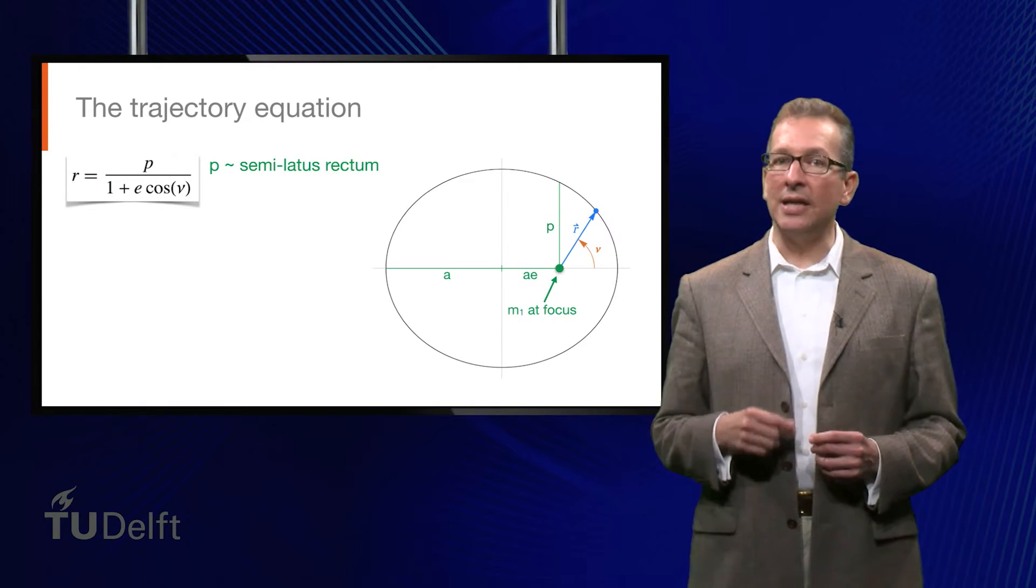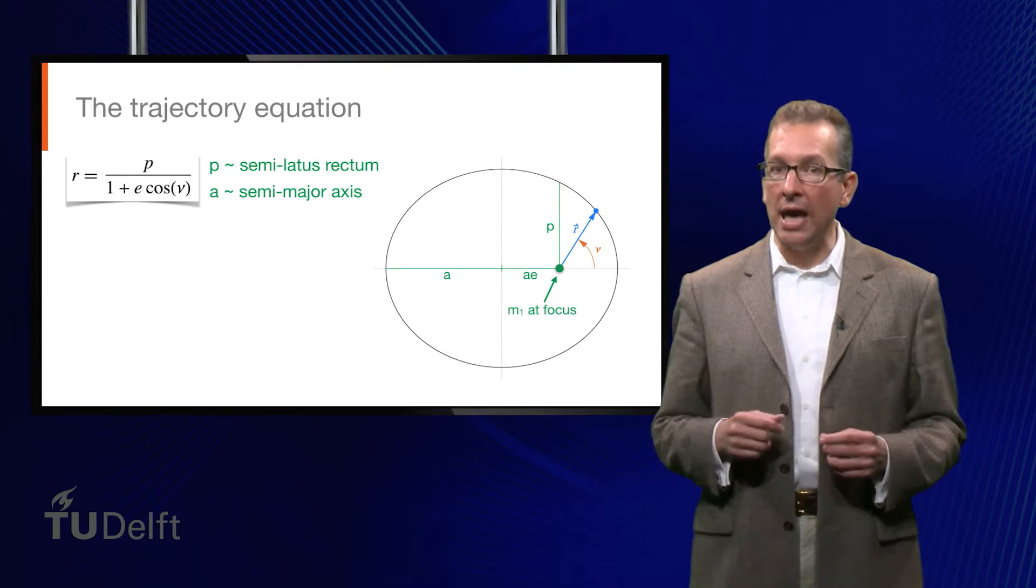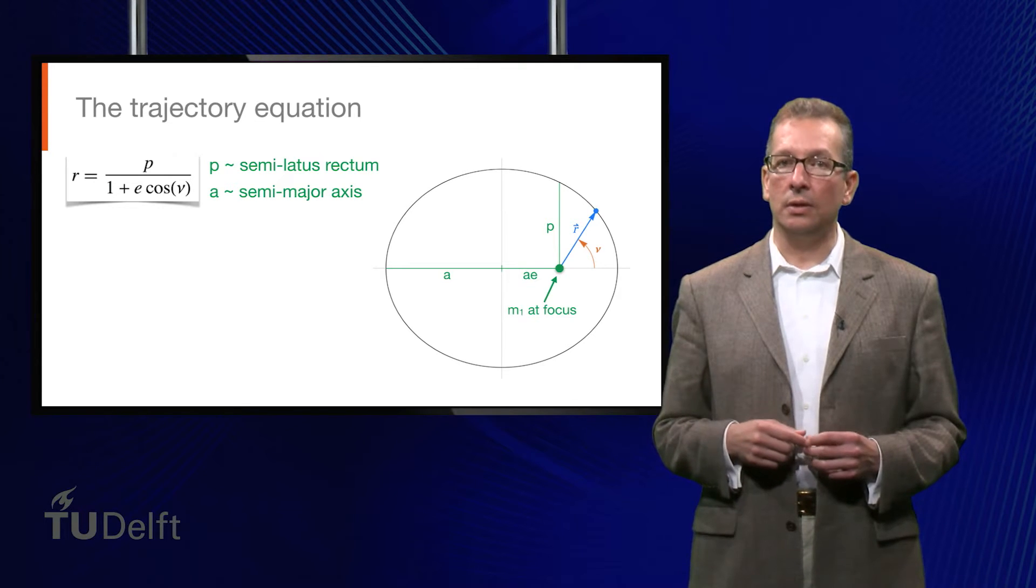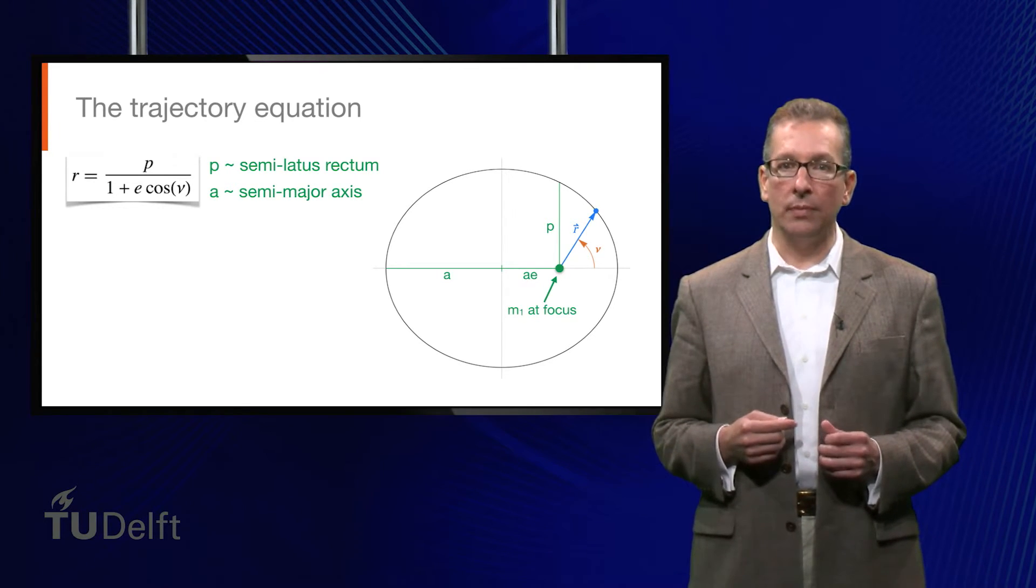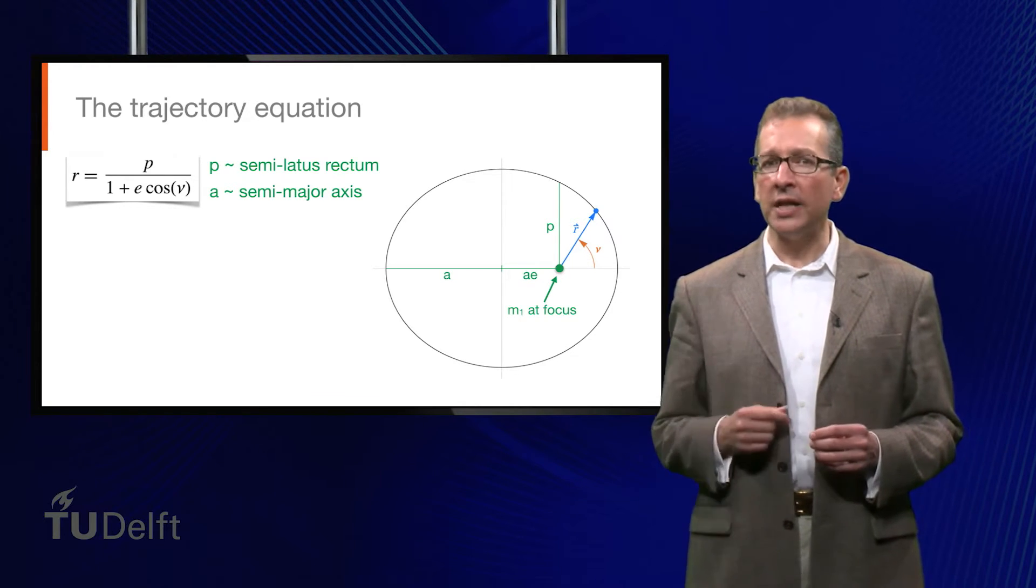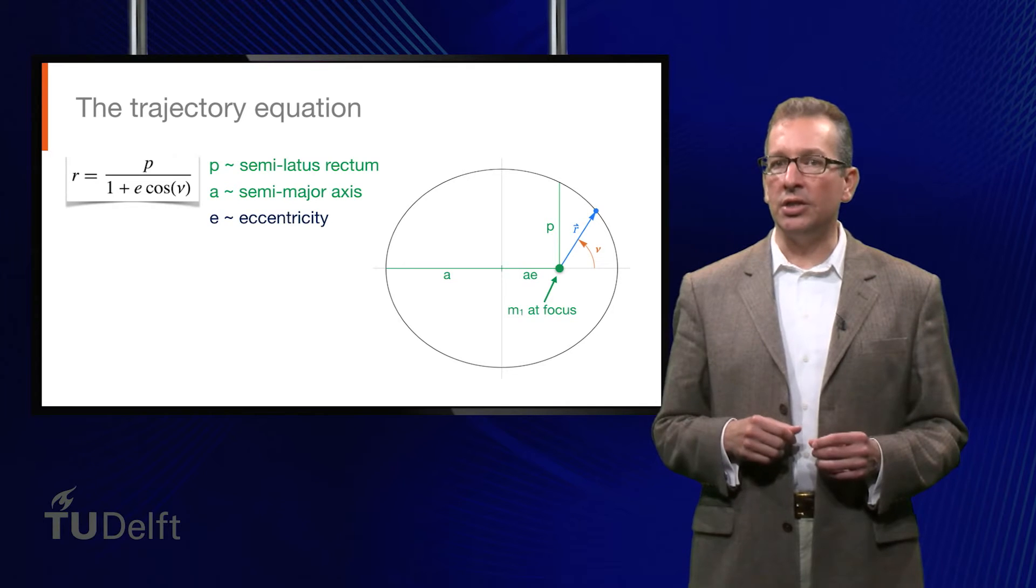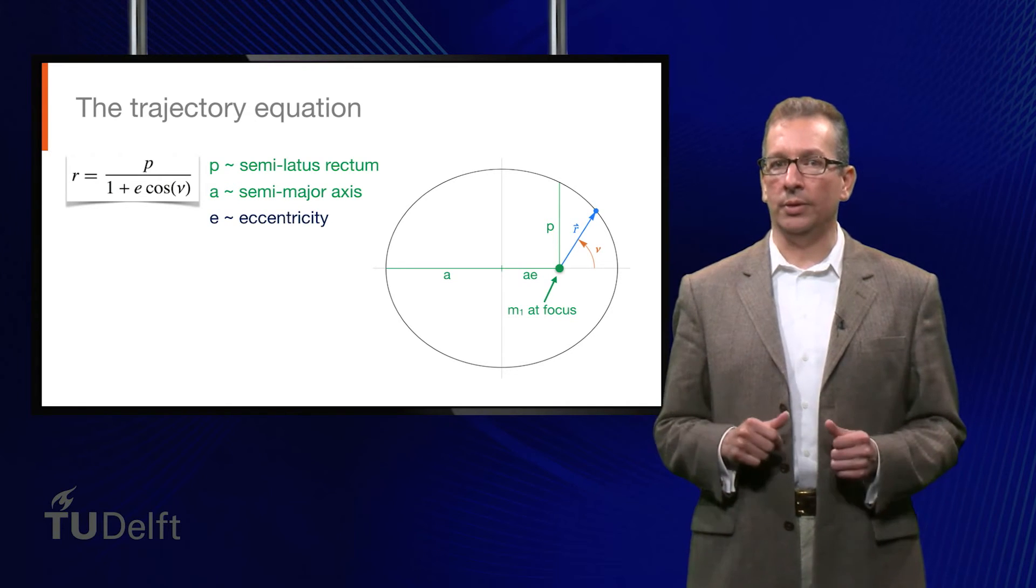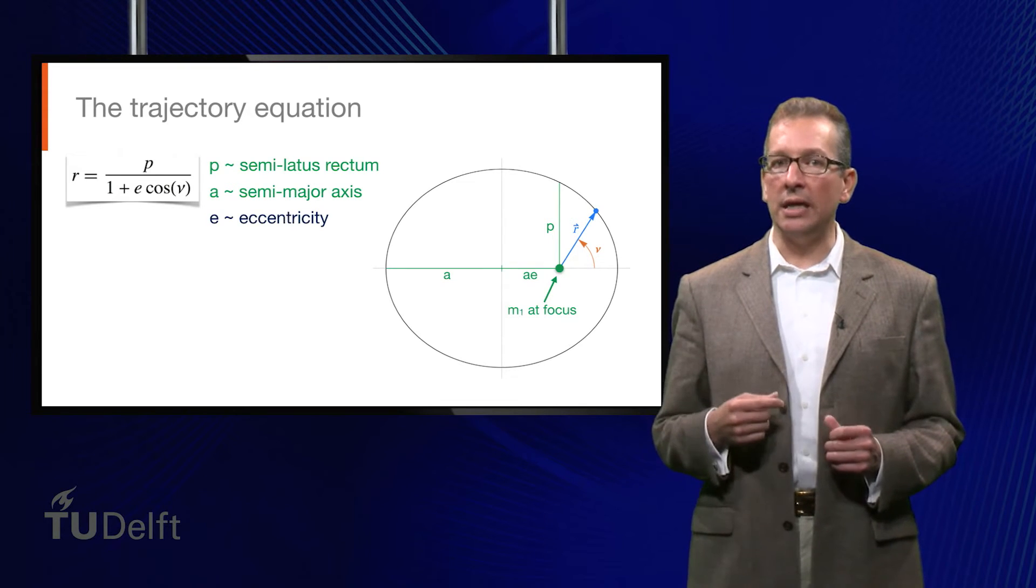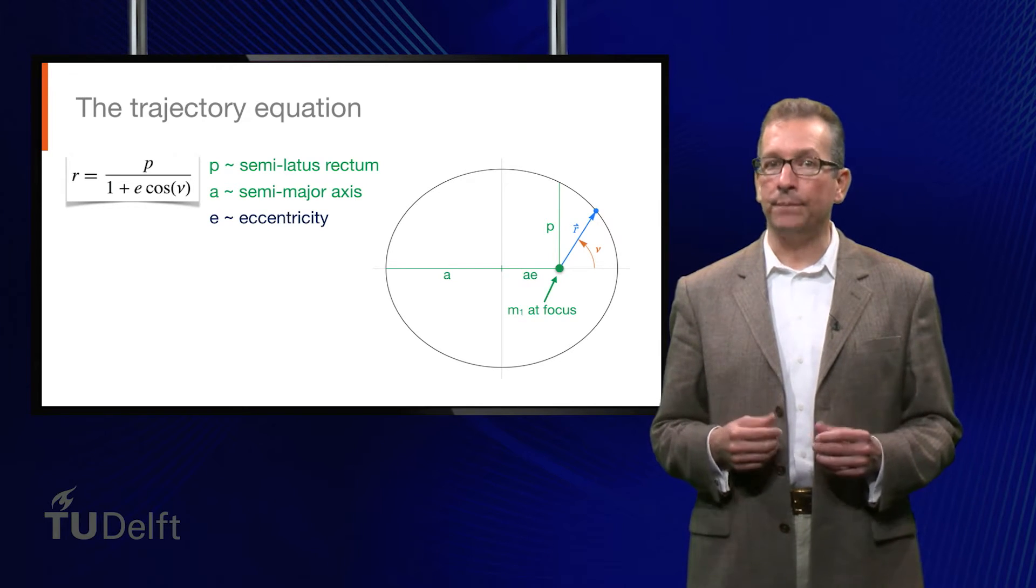Next, we note that A is half the length of the major axis, called the semimajor axis. A determines the size of the orbit and is one of the six key constants, called Keplerian orbital elements, which allows us to fully specify a two-body orbit. The second Keplerian orbital element is the eccentricity e. The eccentricity determines the shape of the orbit. For values of e less than one, the trajectory takes the form of an ellipse, which includes the special case of a circle for which e is zero.